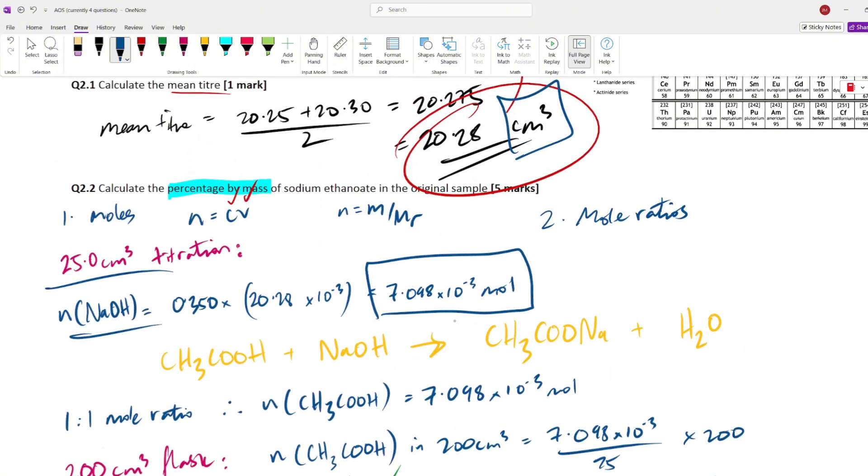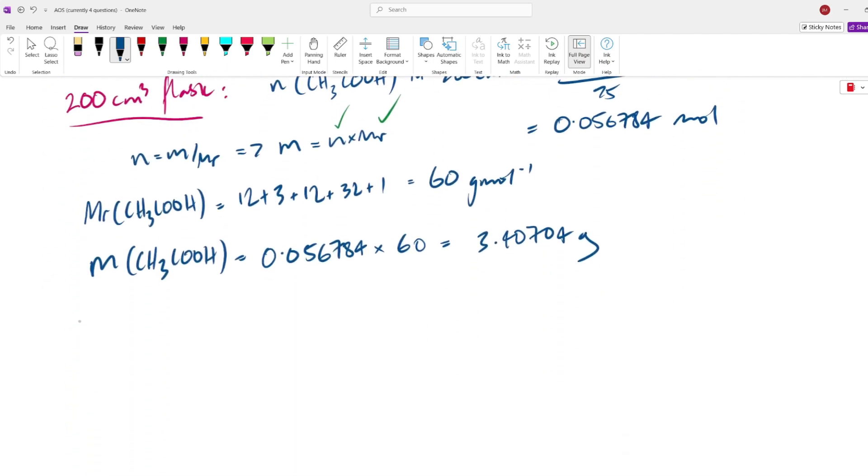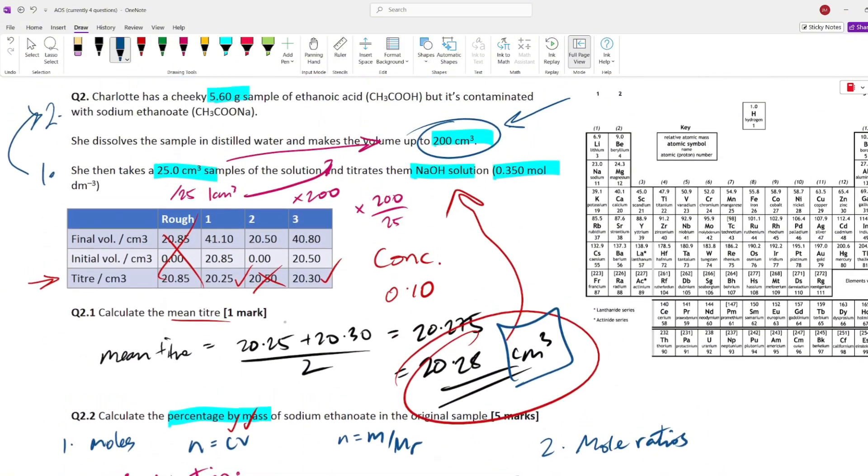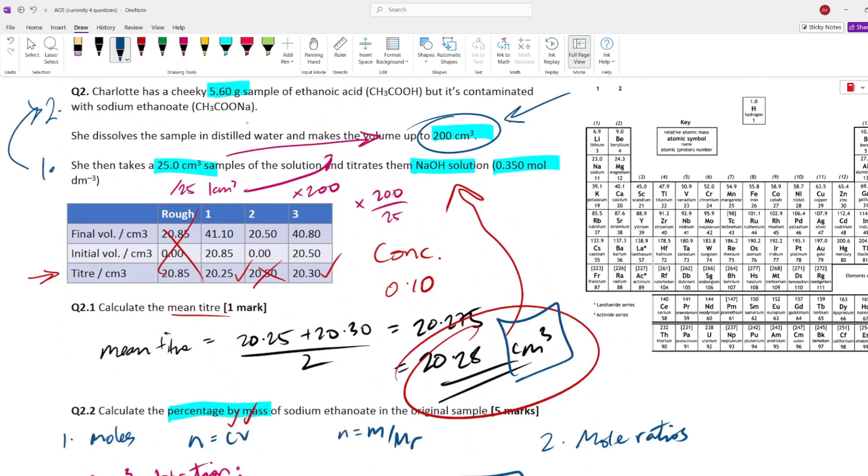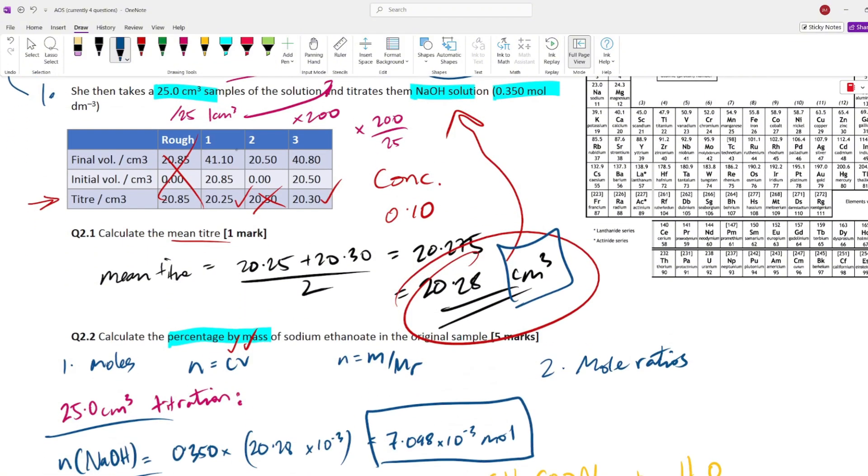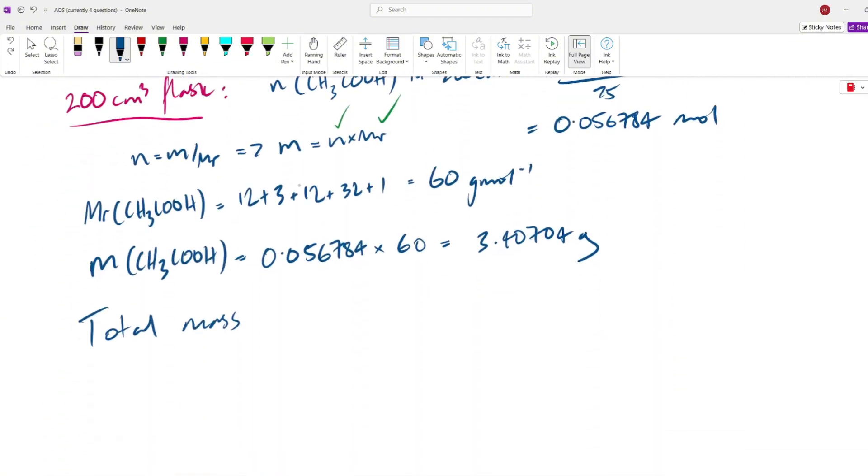Now, is this our final answer? No. We've got the mass. We need percentage by mass. So, if we have total mass, you ever need to know what the mass of something is and you have zero information about it. We have nothing to go on for the sodium ethanoate here. All that we have is the total mass of the sample, which is 5.6. And we just calculated the mass of the thing that's in the sample or one of the two things that's in the sample, ethanoic acid.